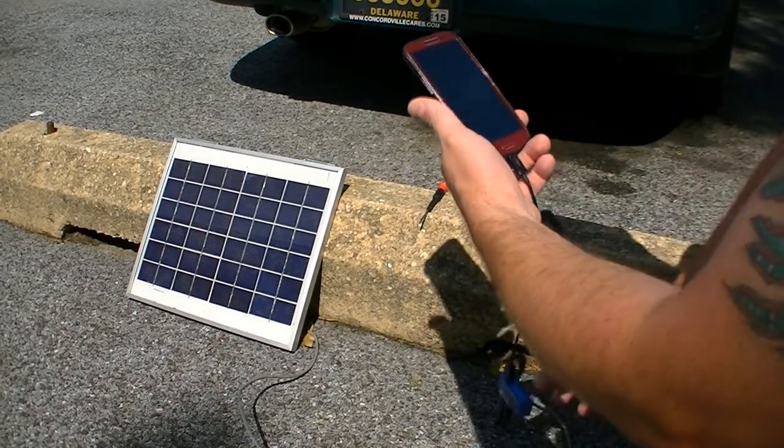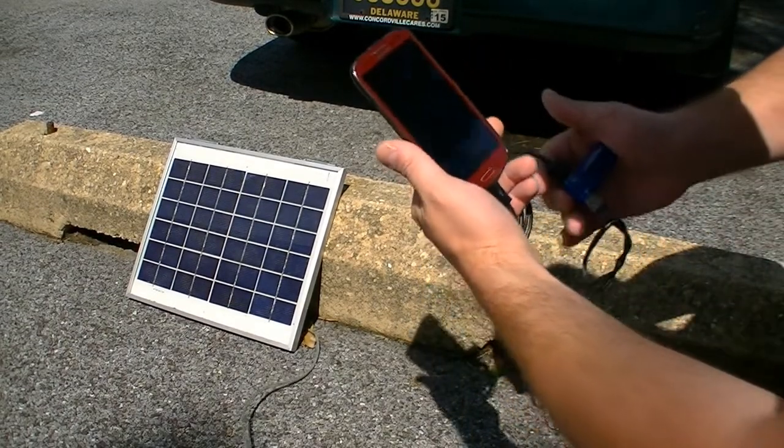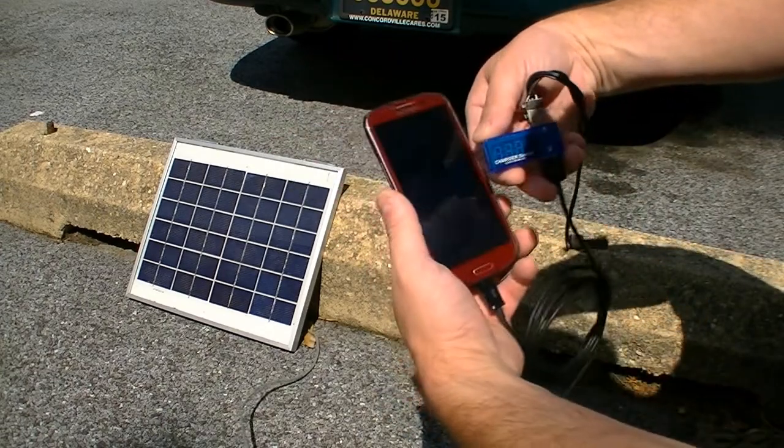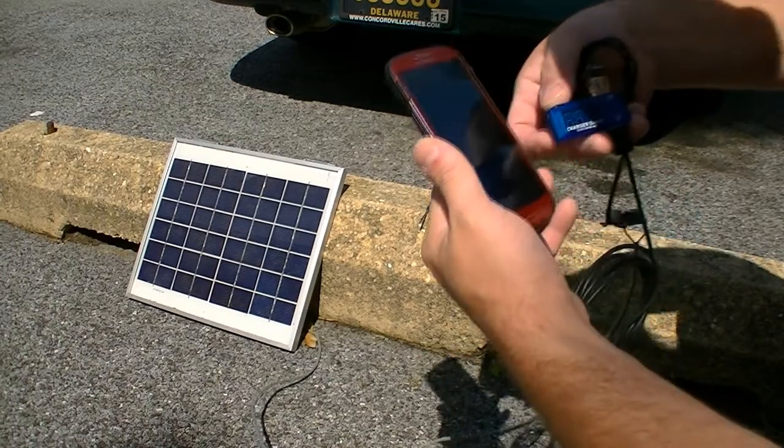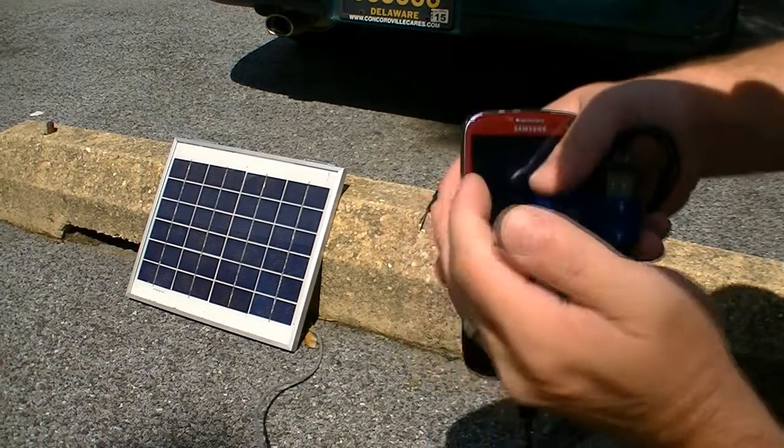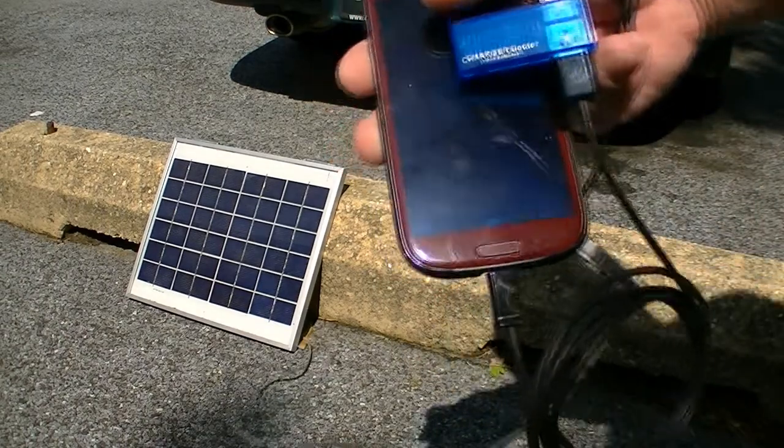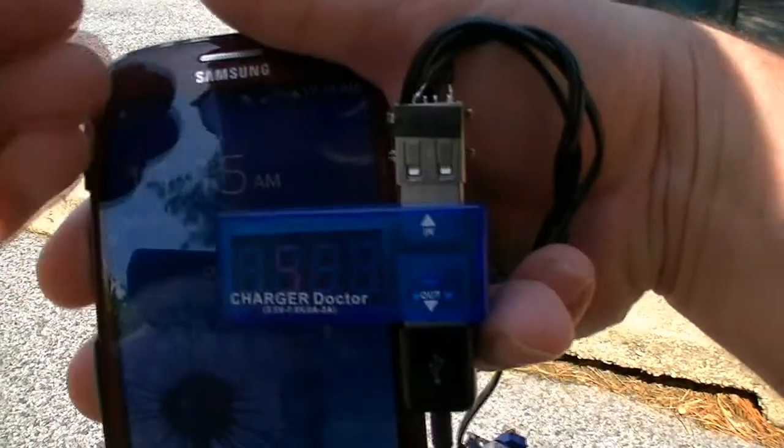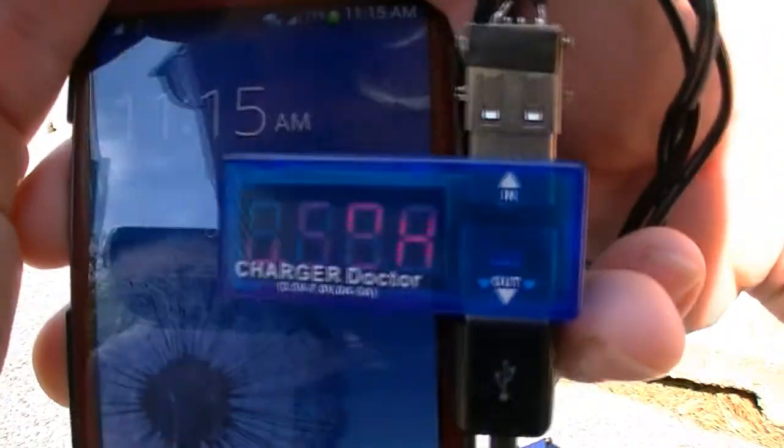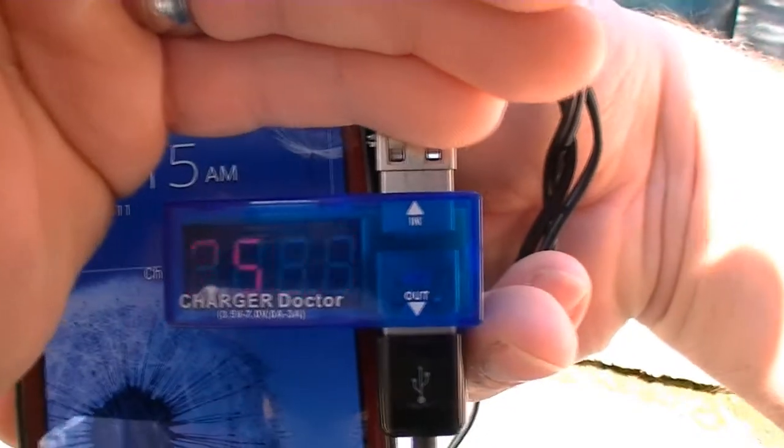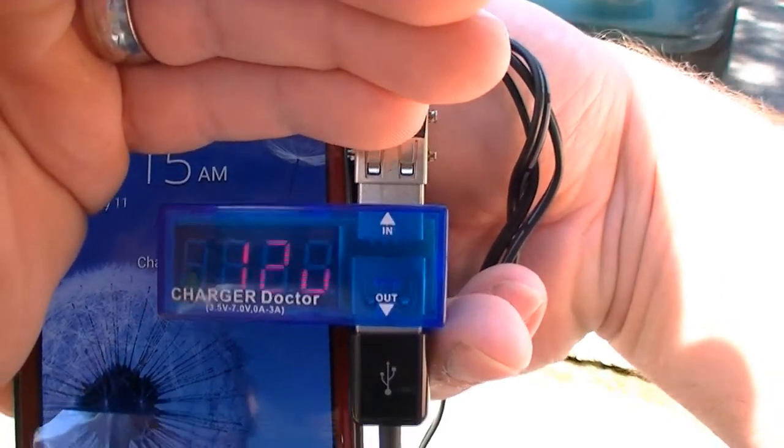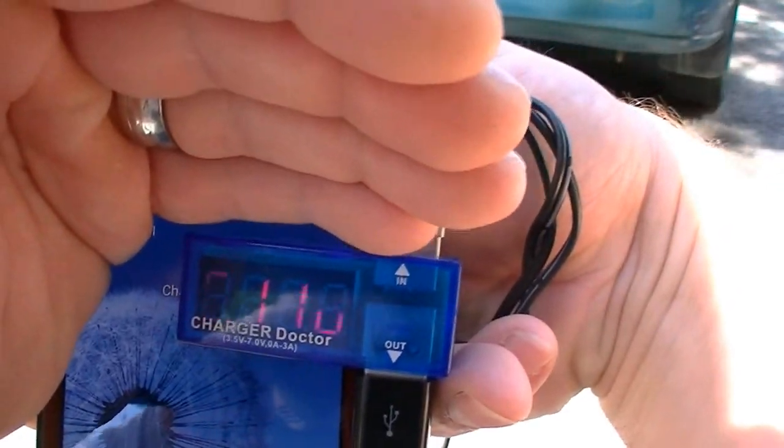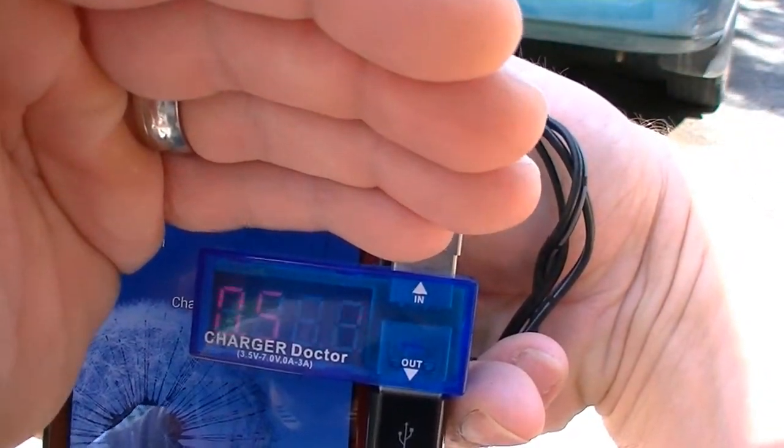Phone is not... Okay, the phone actually kicked on that time and let's see what we're getting here. Kind of hard to tell, the screen is very dim. Let's see what I can get here. 0.59, 0.57 amps. So it's getting some power through it but it's being very finicky.